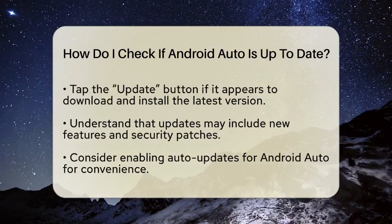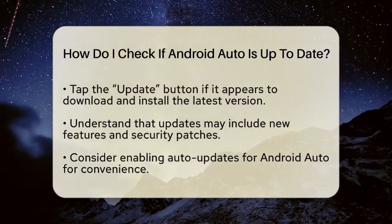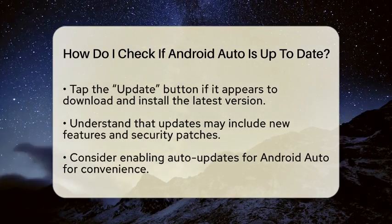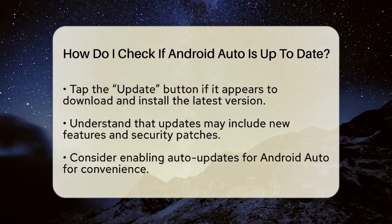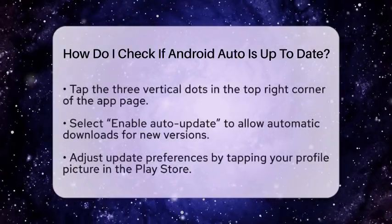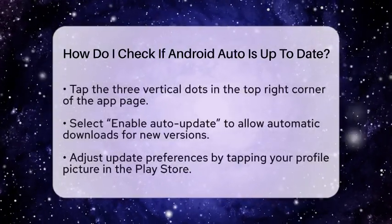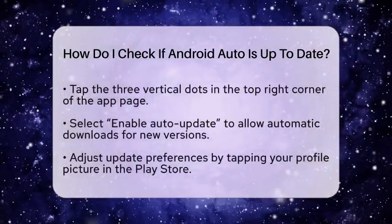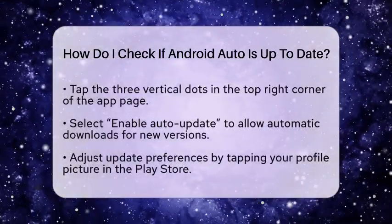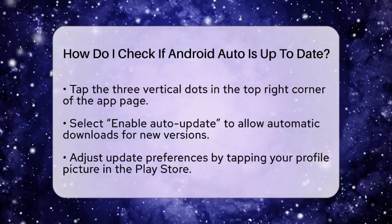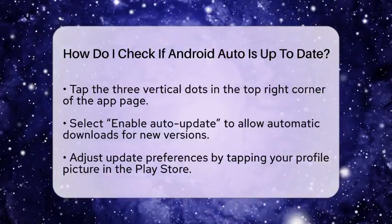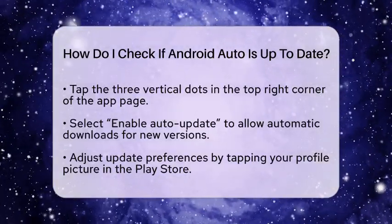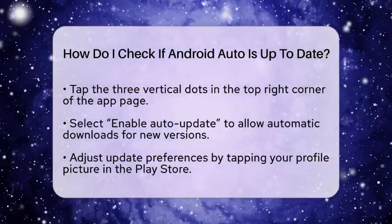To make your life easier in the future, you might want to enable Auto updates for Android Auto. On the app page in the Google Play Store, tap the three vertical dots located in the top right corner. From there, select Enable Auto Update.